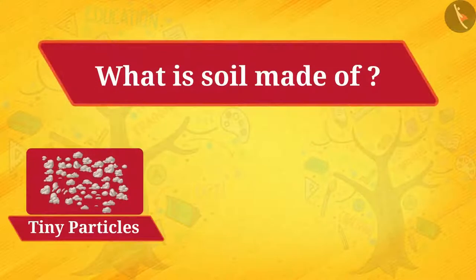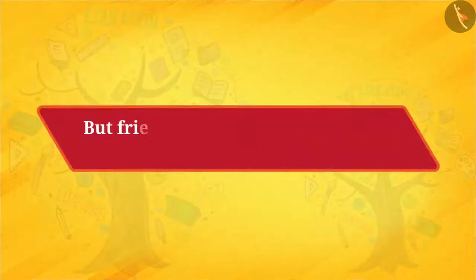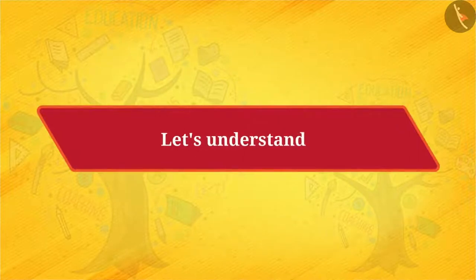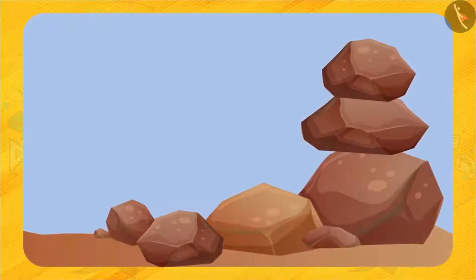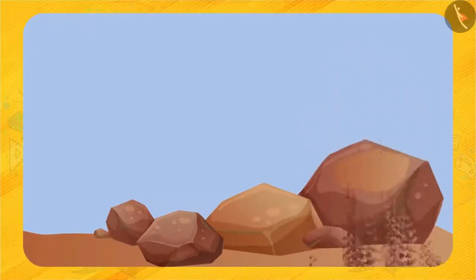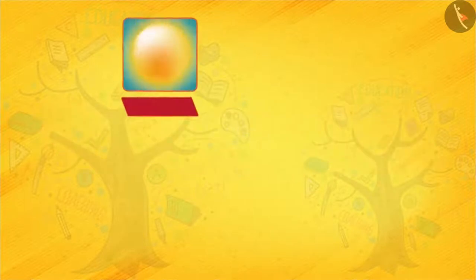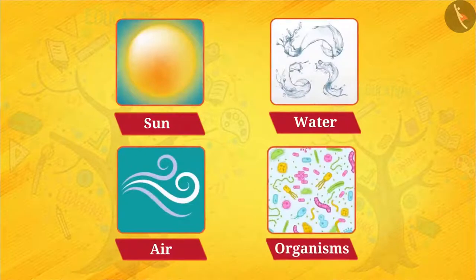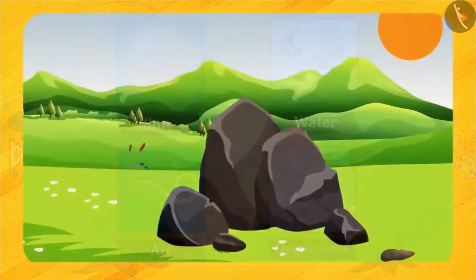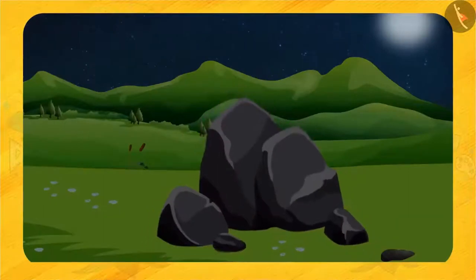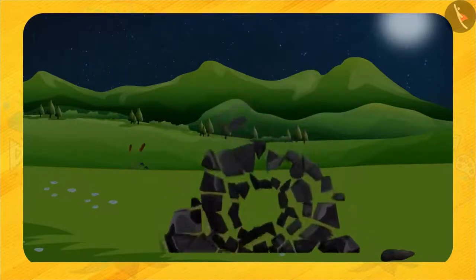The soil is made up of tiny particles, humus, and microorganisms. But friends, have you ever wondered where these small particles come from? You must have seen huge rocks. Generally, these rocks break into small particles and later form the soil. But how are these huge rocks crumbling? These big stones break under the influence of sun, water, air, and living organisms. During daytime, the sun heats up the big stones, making them expand. During night, these stones cool down and contract. Since all parts of a rock do not expand and contract at the same rate, this results in the formation of cracks, and ultimately the huge rocks break up into smaller pieces.